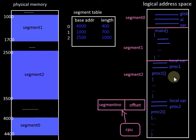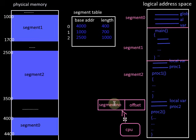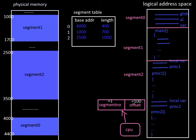Now, how does address translation work in segmentation? The CPU will generate the logical address, and that logical address specifies the segment number and the offset within that segment. Suppose we have to access word number 100 within segment number 1, hence the segment number equals 1 and the word number equals 100. This segment number will point to one particular entry of the segment table.